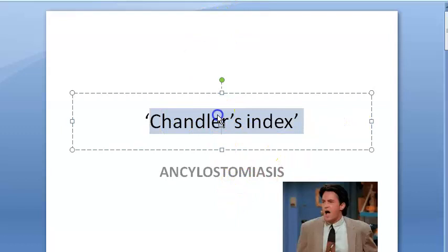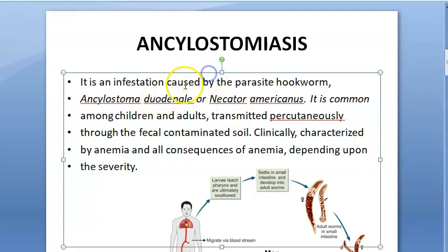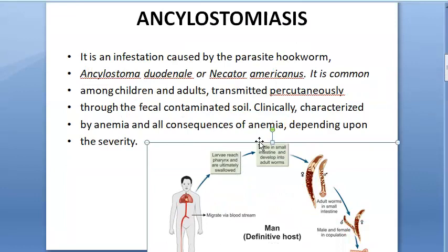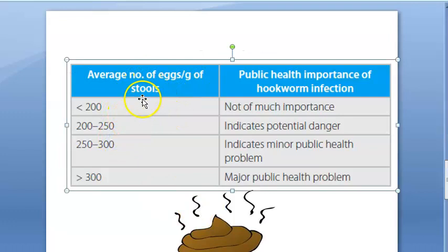In this video we are looking at Chandler's Index. In hookworm infestation — ankylostomiasis — the Chandler Index is an indicator of the amount of infestation. Chandler's Index is nothing but the average number of hookworm eggs per gram of stool.